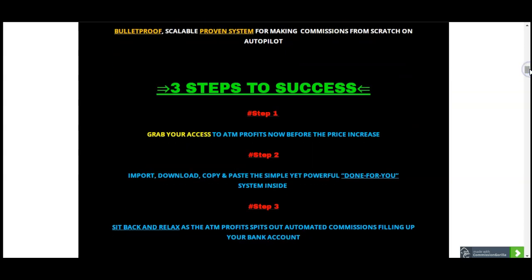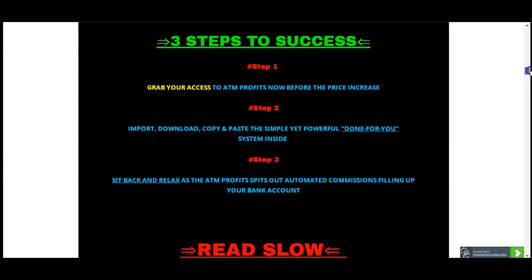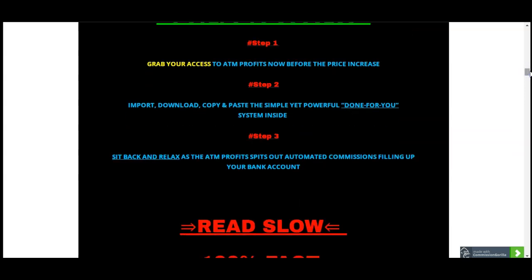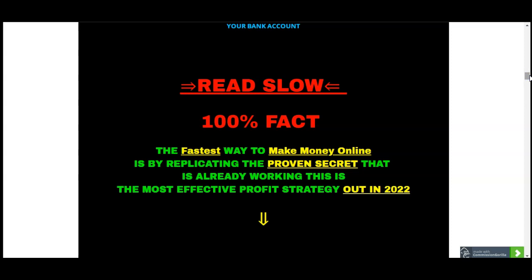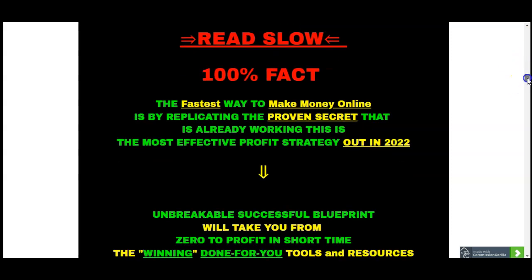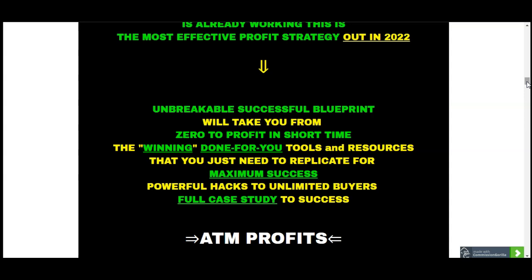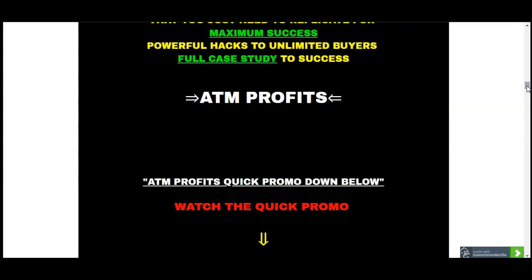The three steps to success with ATM profits are: first, grab your access today through my value page. Second, download a copy and paste the simple yet powerful done-for-you system inside, which I'll be showing you inside the actual members area. Third, just sit back, relax and watch the commission profits start to bank into your account. The fastest way to make money online is by replicating a proven secret system that is already working — I will also give you amazing value that will allow you to better understand how you can start making money today.